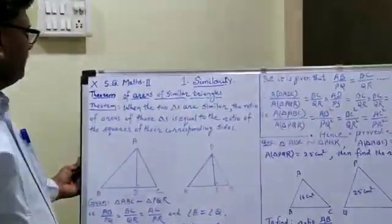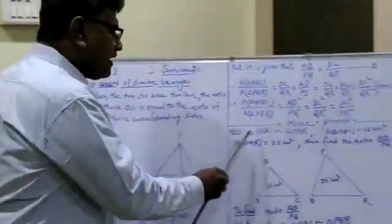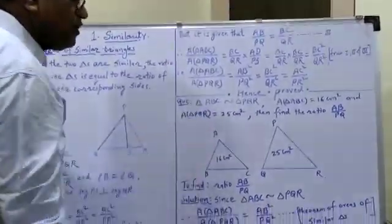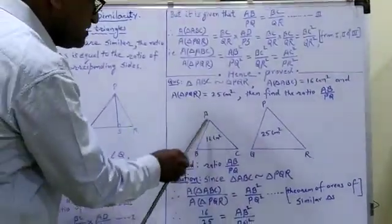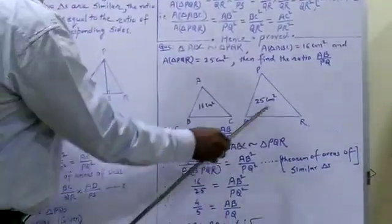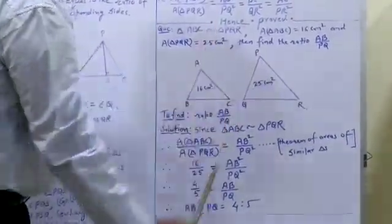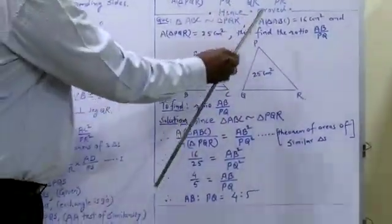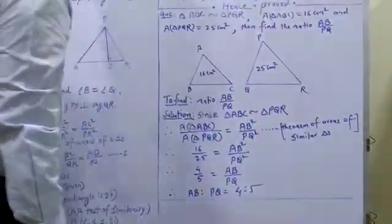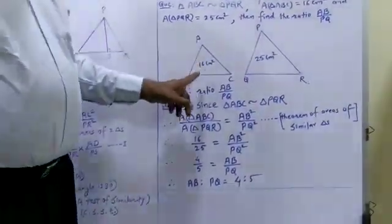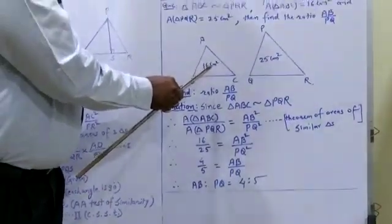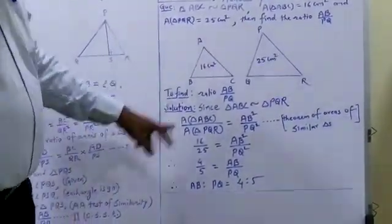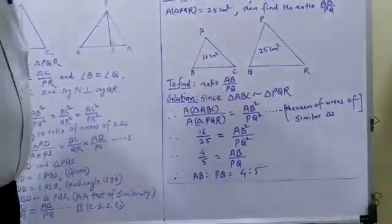Let us see one question related to this theorem. Triangle ABC is similar to triangle PQR. Area of triangle ABC equals 16 cm square, and area of triangle PQR equals 25 cm square. Find the ratio AB upon PQ.